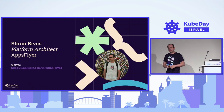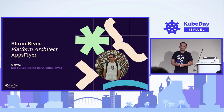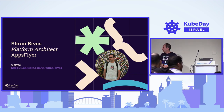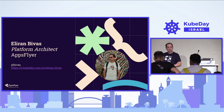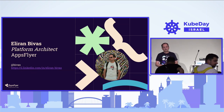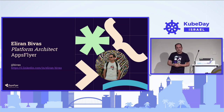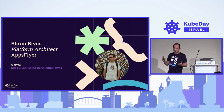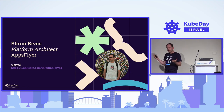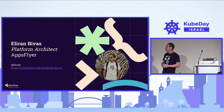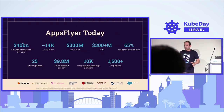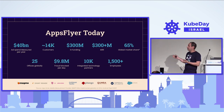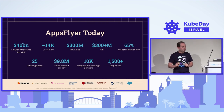A little bit about myself. My name is Eliran Bivas. I'm the architect for the platform group at AppFlyer. I've worked for AppFlyer for almost four years now. I have a real passion for technology, so if you look at me on LinkedIn or any other place, you will see that I am a self-proclaimed tech junkie. A little bit about AppFlyer — I'll let the numbers speak for themselves, but I'll read out some of them.